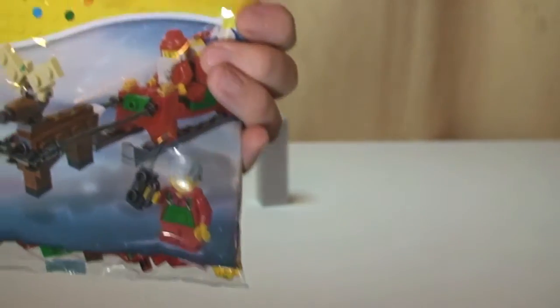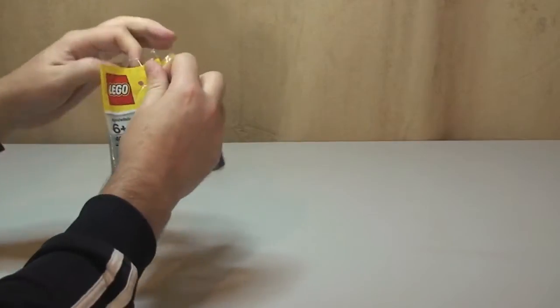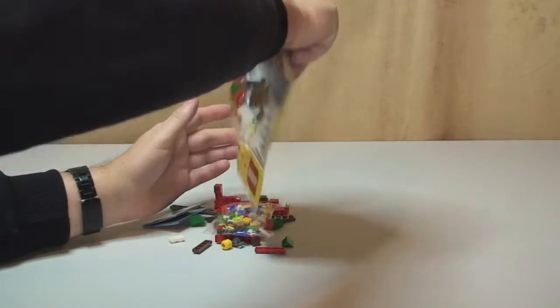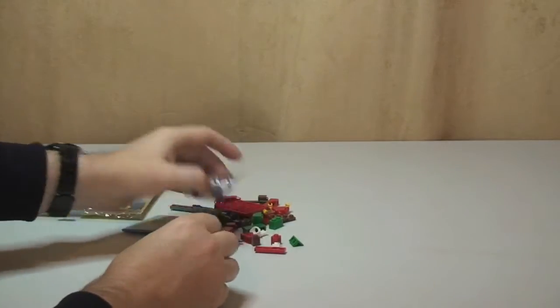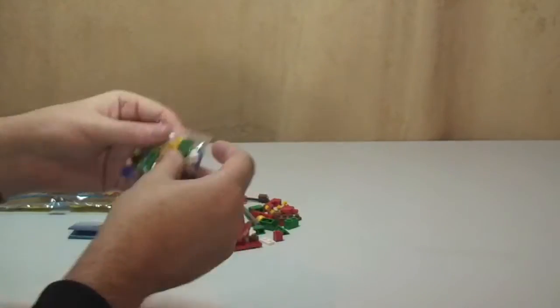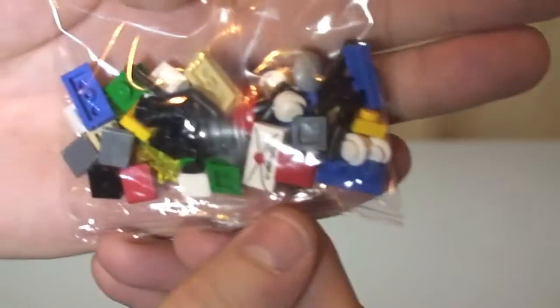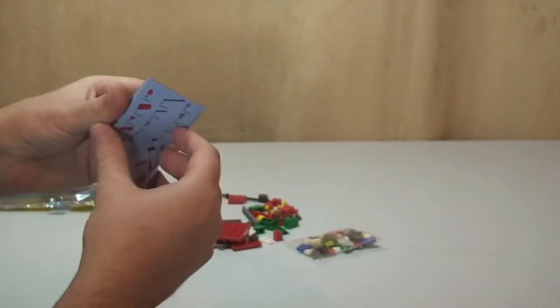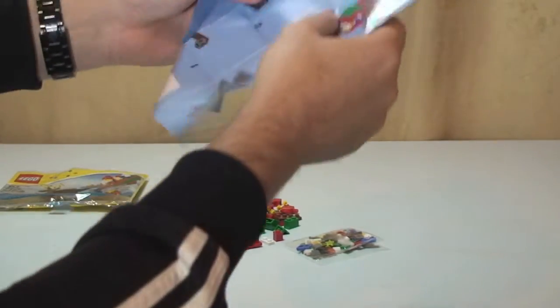So let's get on with the unbagging. That's all the pieces out. We have another bag inside - this is obviously the smaller pieces - and our instructions. Looks like it's quite a big instruction sheet actually for a polybag.